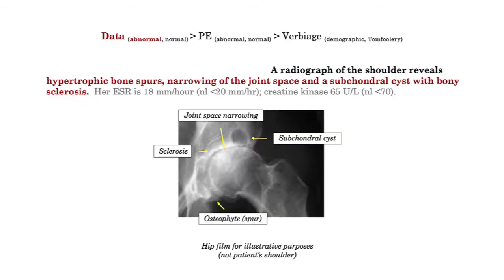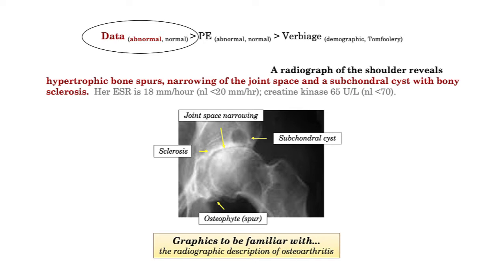Here is the money — abnormal data. For teaching purposes, I've included an x-ray of the hip to highlight the findings. These include hypertrophic bone spurs, more commonly referred to as osteophytes. Narrowing of the joint space is noted, which is classic for osteoarthritis. And finally, a subchondral cyst is described with bony sclerosis. Regardless of the information included in the stem, this data essentially confirms the diagnosis of osteoarthritis. Let's label this as a graphic you need to know.